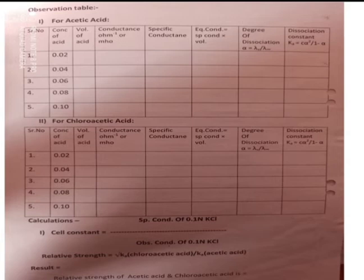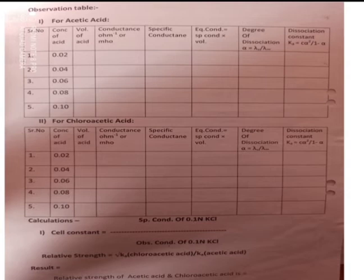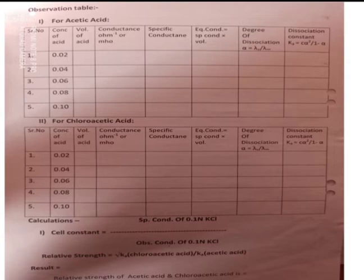Now, the calculations are given here. Cell constant is equal to the specific conductance of 0.01 normal KCl divided by the observed conductance of 0.01 normal KCl. Find out the cell constant; it will be less than or equal to 1. Then, relative strength is equal to the square root of Ka of chloroacetic acid divided by Ka of acetic acid. Note down the result: relative strength of acetic acid and chloroacetic acid.